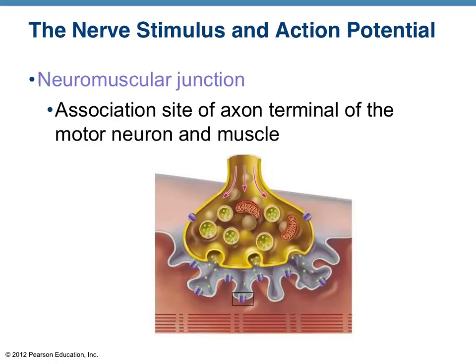Here's a diagram of a neuromuscular junction — neuro referring to nerve, and muscular, the muscle. So the junction between the neuron, and that's the axon terminal, it's the end of the neuron. It's kind of the end of the road for the electrical impulse of the neuron, and then the muscle tissue.